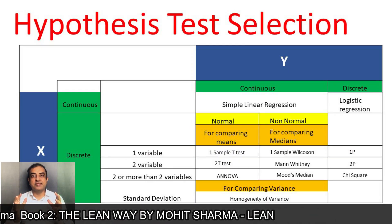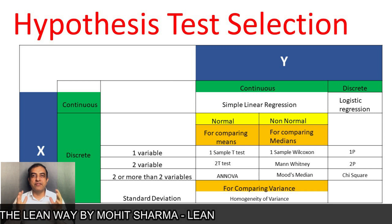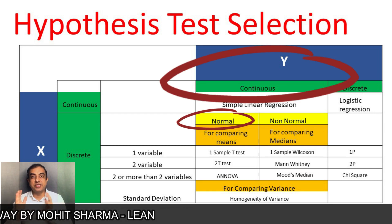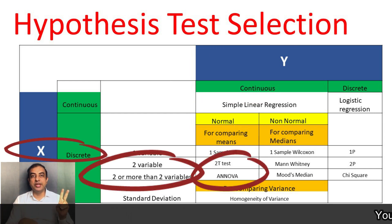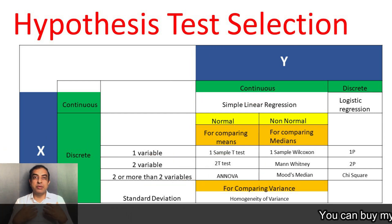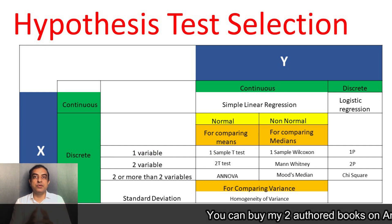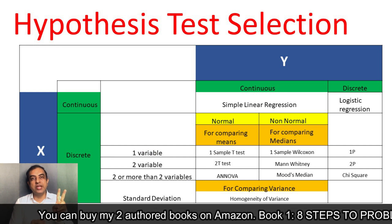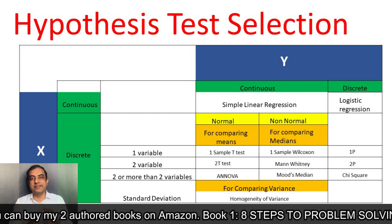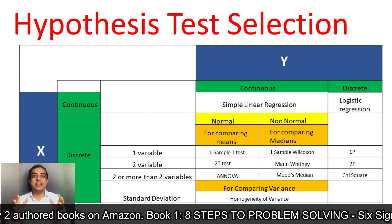Both of these hypothesis tests are performed when Y is continuous and normal, and X is discrete and has two variables. I've seen quality practitioners getting confused about which tool to use when comparing two variables in one X.